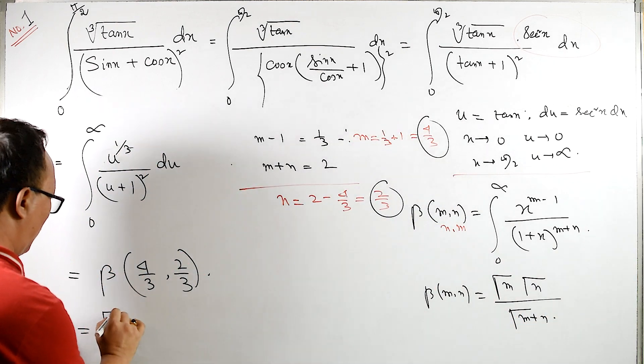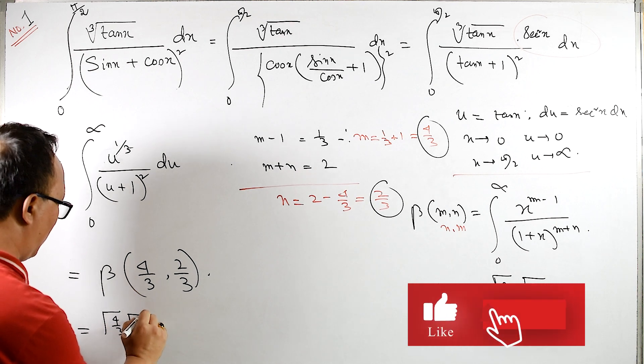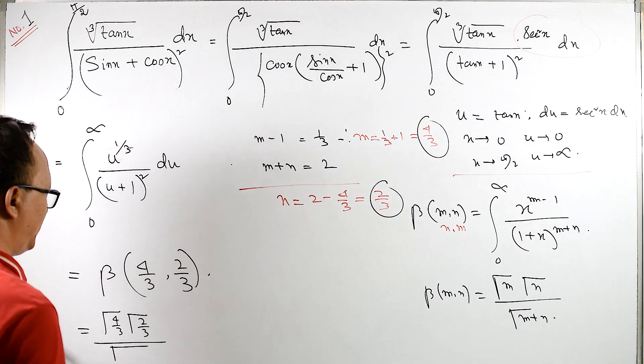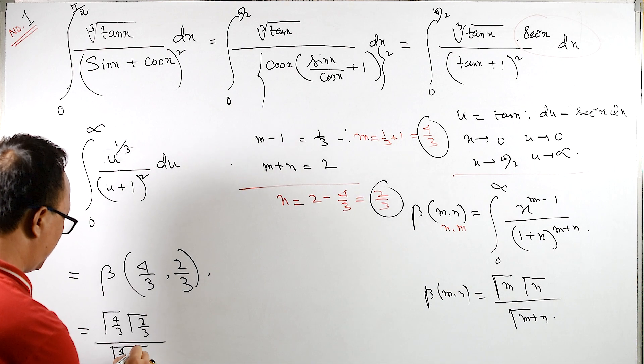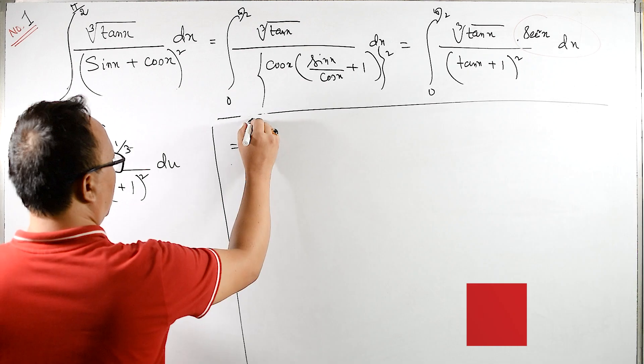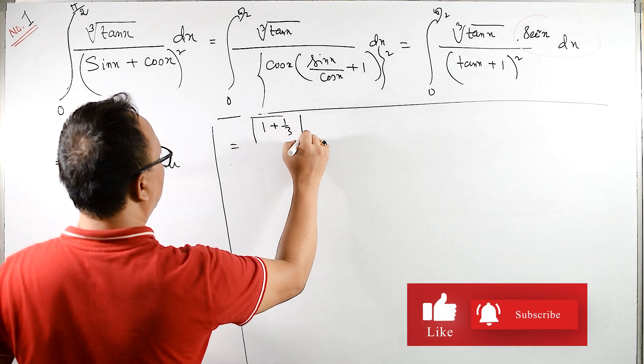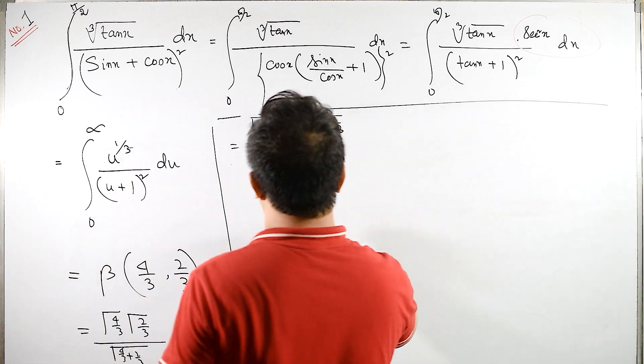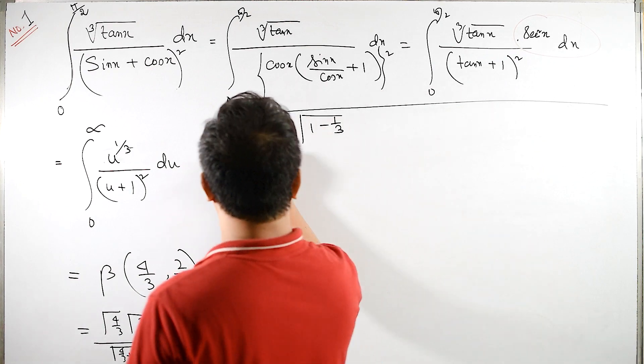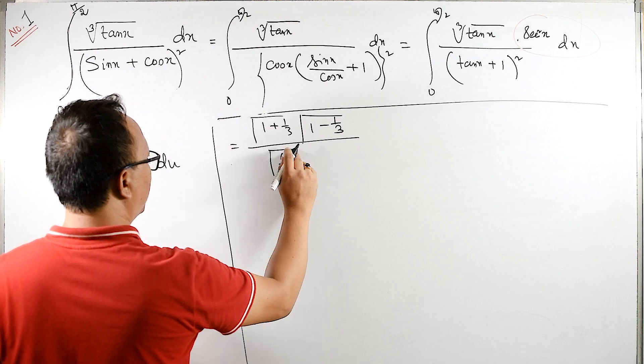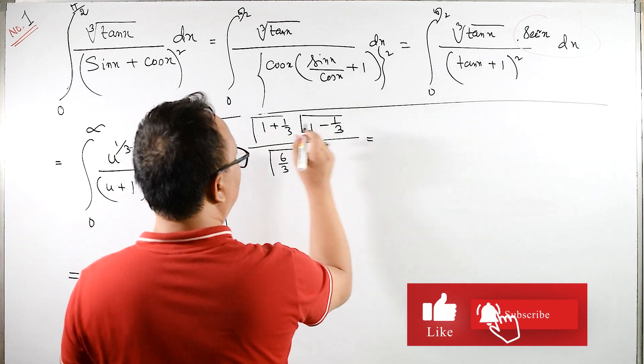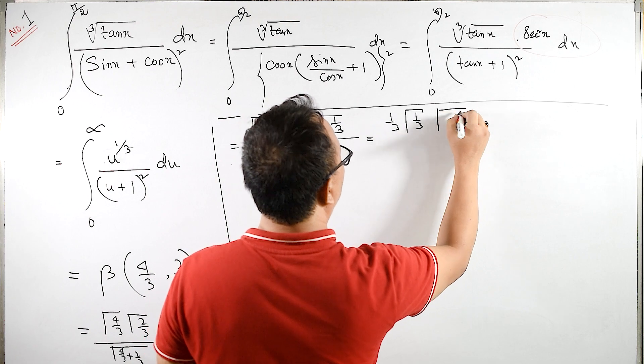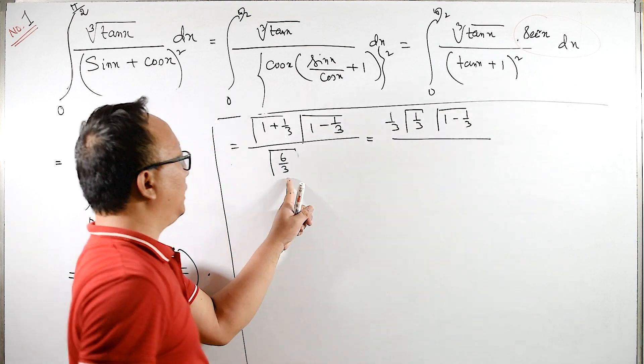So this is same as gamma of 4 by 3 and gamma of 2 by 3 and gamma of 4 by 3 plus 2 by 3. Is same as 4 by 3 plus 2 by 3. Gamma of 4 by 3 is same as gamma of 1 plus 1 by 3 and gamma of 2 by 3 is same as 1 minus 1 by 3. Upon this is same as gamma of 6 by 3.